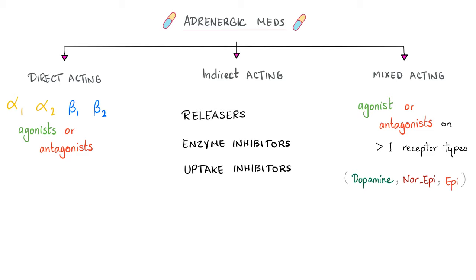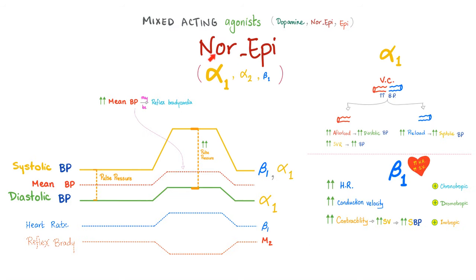We have direct acting, indirect acting, and mixed acting adrenergic medications. Today's topic is mixed acting — they act on both alpha and beta receptors. Epinephrine acts on alpha and beta receptors as a mixed agonist. Norepinephrine is an agonist on alpha and beta, but it's more of an agonist on the alpha than the beta. The beta 1 effect is tiny, and beta 2 has essentially left the chat.